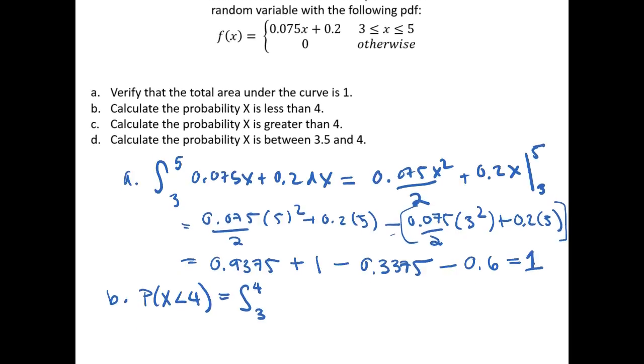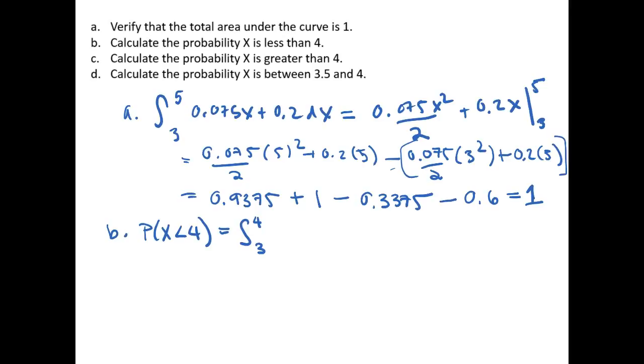So that is, in this case 4. Scroll up a little bit. And this is then equal to 0.075x plus 0.2 dx. If we integrate this function, we again get 0.75x squared over 2 plus 0.2x. Evaluate this from 3 to 4.